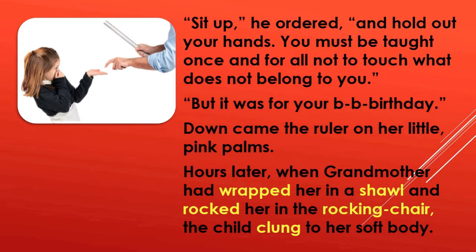He said, 'You must be taught once and for all not to touch what does not belong to you.' The father ordered Kizia to stand up and hold out her hands, saying she must learn not to touch anything which did not belong to her. The girl was about to give an explanation — 'But it was for your birthday' — but before she could say something, down came the ruler on her little pink palms. Her father hit her with his ruler on her palms, the front flat area of the hand.